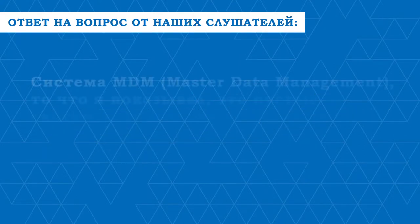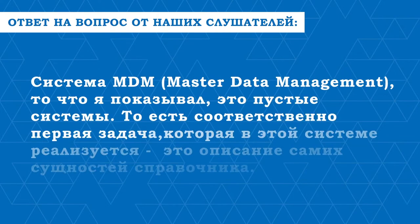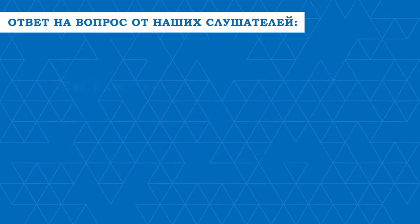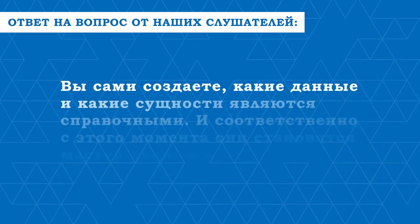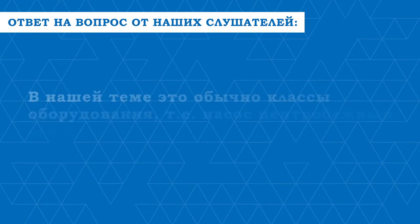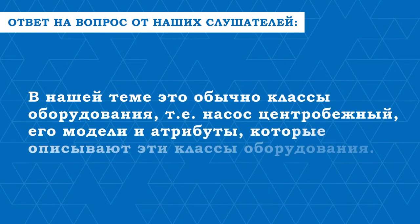Система MDM, то, что я показывал — это пустые системы. Соответственно, первая задача, в которой эта система реализуется — это описание самих сущностей справочника. То есть, вы сами создаёте, какие данные и какие сущности являются справочными, и с этого момента они становятся мастер-данными. В нашей теме это обычно классы оборудования — насос центробежный, его модели и атрибуты, которые описывают эти классы оборудования.